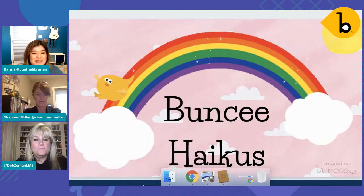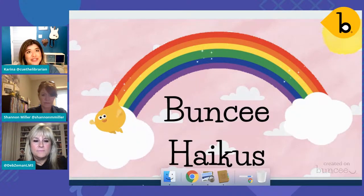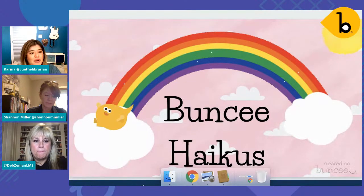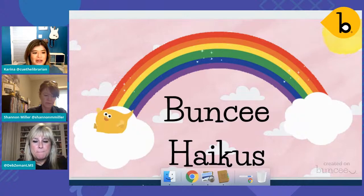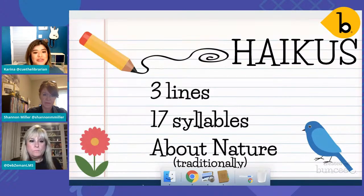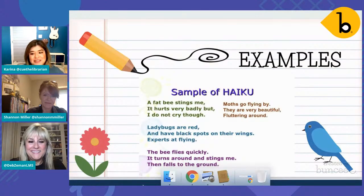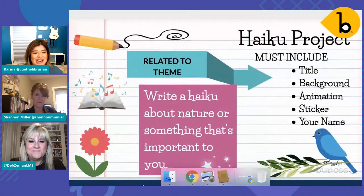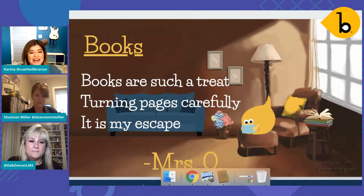Buncee haikus — I love this because my teachers do haikus in ELA and social studies. To introduce haikus or poetry in general, they come to the library for a lesson, I go over the elements of haikus, and they create their Buncee haiku. It's a fun way to create a visual element instead of just writing it on paper. I go over what it's about, traditionally read them different haikus, and offer my example: 'Books are such a treat, turning pages carefully, it is my escape.' It's really fun to see them take off with that creativity and work out in their mind how they create a visual representation of a haiku.